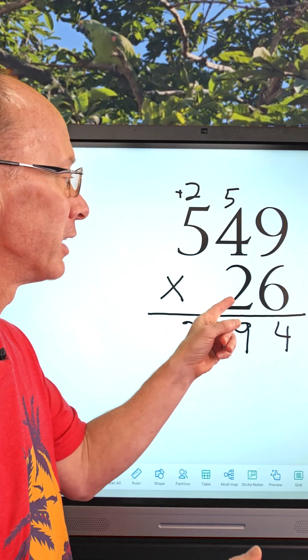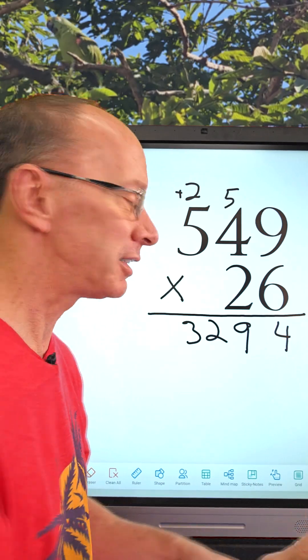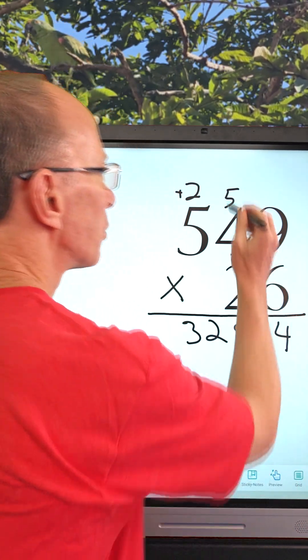Then we're going to take 2 times 9. We're going on to 2 times 9. What is 2 times 9? 18. So I put the 8 right here, put the 1 up there. We're going to add that 1 in a little bit, not yet.